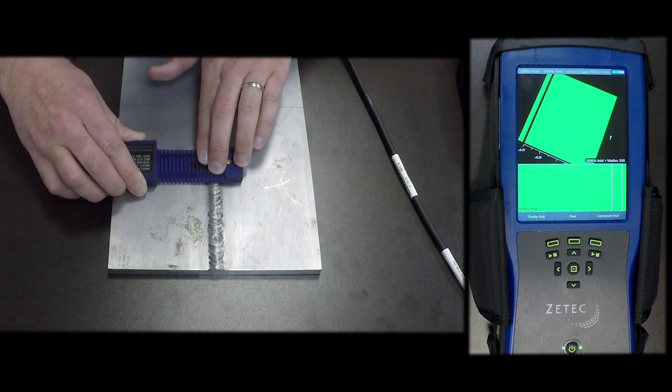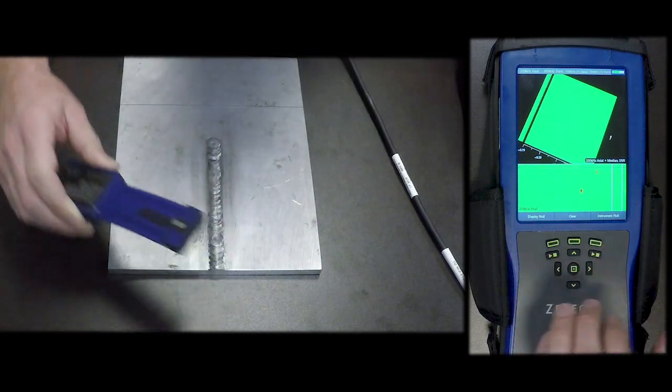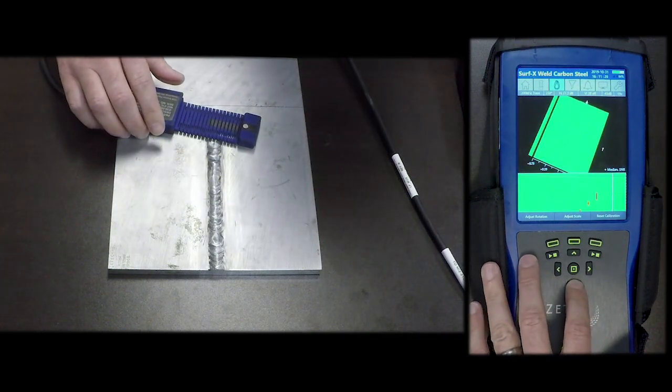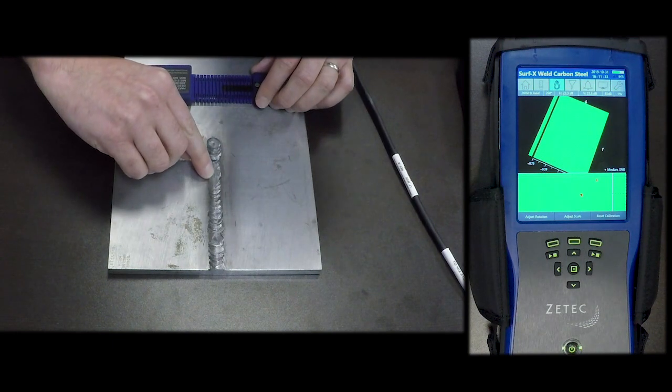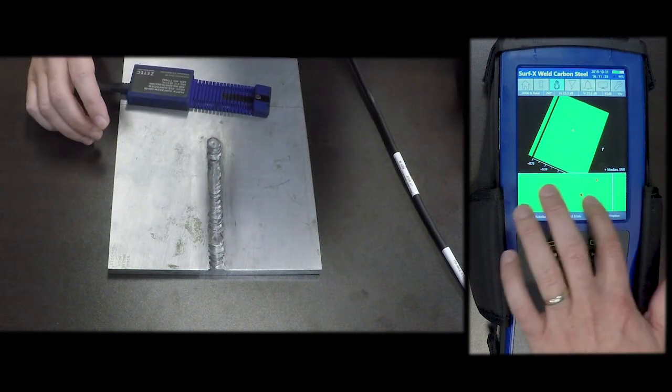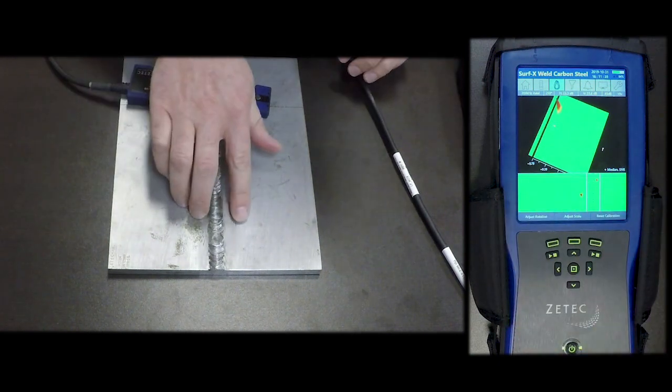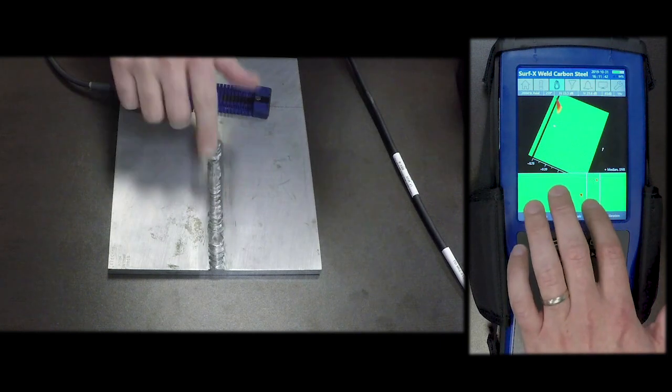And just run over the crown of the weld. In the axial channel you can see there's an axial indication there. It's actually because I was slightly off of the crown, it's picking up that axial notch out in the heat affected zone.